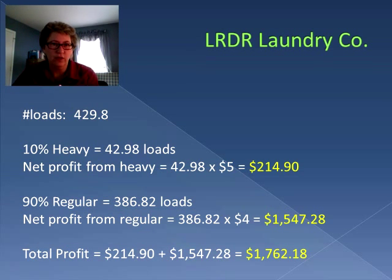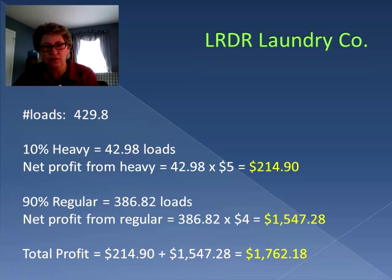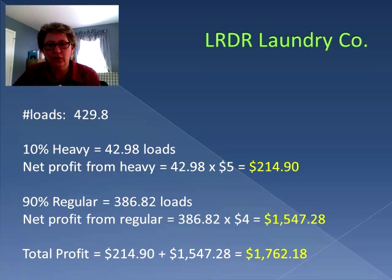Now using this information, we can determine the profitability of the company. We know the overall number of loads is 429.8. 10% of them are heavy loads, so 10% of 429.8 is 42.98. We multiply that by the profit per heavy load of $5, and we know that the profit from heavy loads in a week is $214.90. 90% of the loads are the regular or normal loads, which turns out to be 386.82 loads.